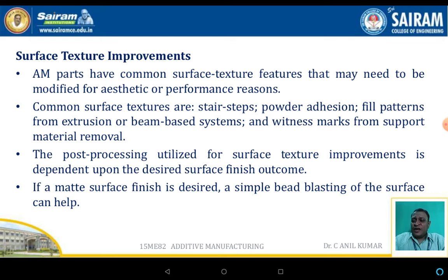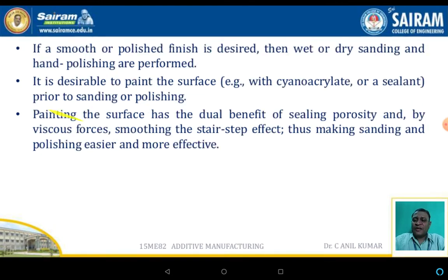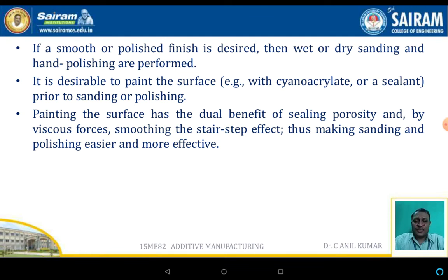Surface texture improvement: additive manufacturing parts have common surface texture features that may need to be modified for aesthetic or performance reasons. Common surface textures include stair steps, powder addition, filled patterns from extrusion or beam-based systems, and witness marks from support material removal. The post processing used for surface texture improvement depends upon the desired surface finish. If a matte surface finish is desired, simple bead blasting of the surface can help. If a smooth or polished surface is desired, wet or dry sanding and hand polishing are performed.